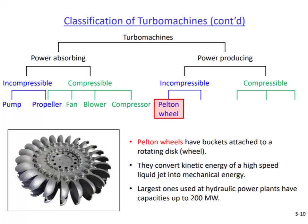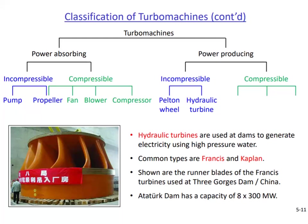The largest Pelton wheels used in hydraulic power plants can produce up to 200 megawatts of power. The next item is the hydraulic turbine — when we say hydraulic turbine we typically mean Francis or Kaplan types. They are used in dams to generate electricity.